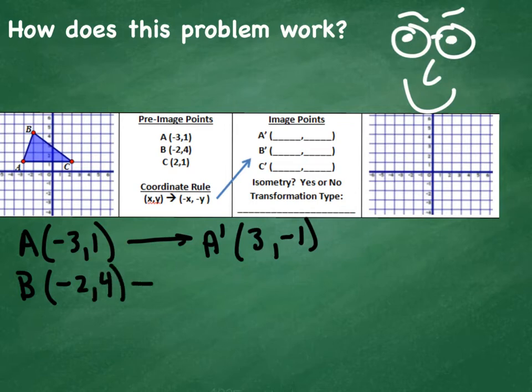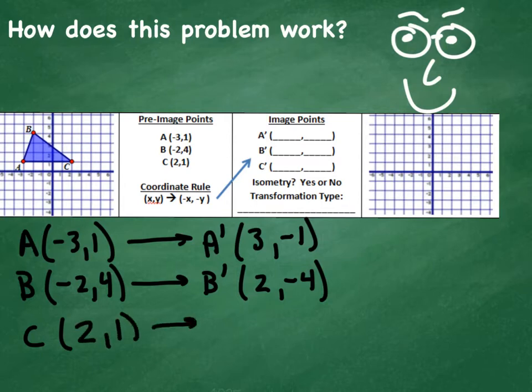4) when mapped using this coordinate rule would become (2, -4), and then C at (2, 1) gets mapped to C prime at (-2, -1). Now those values would all get placed right in here, but I won't do that at this stage.